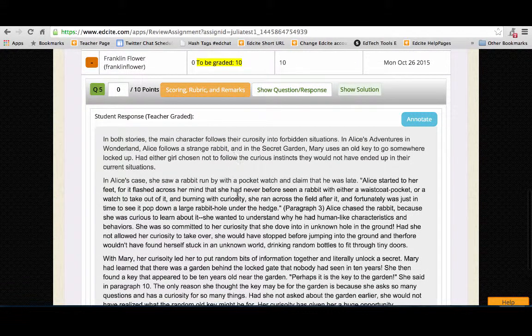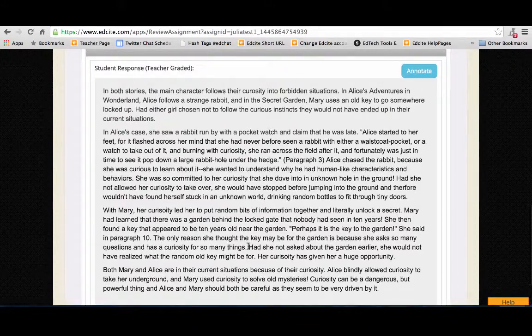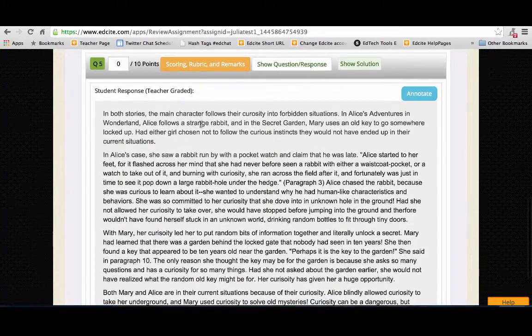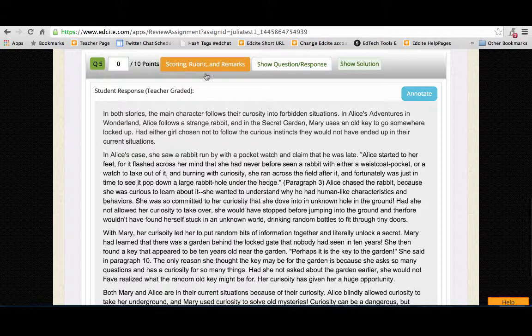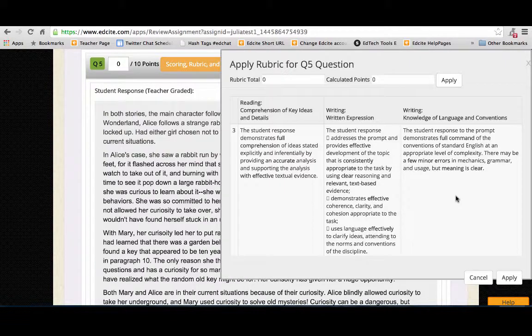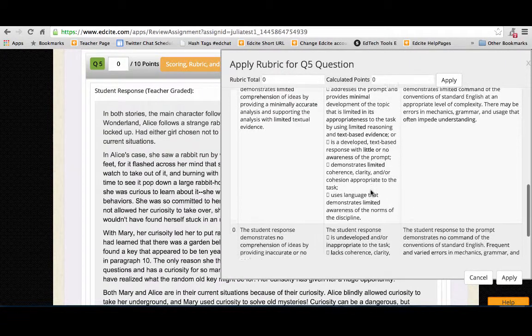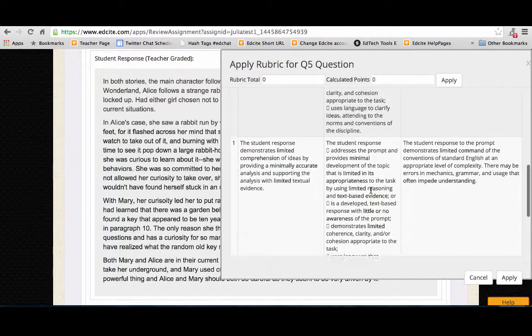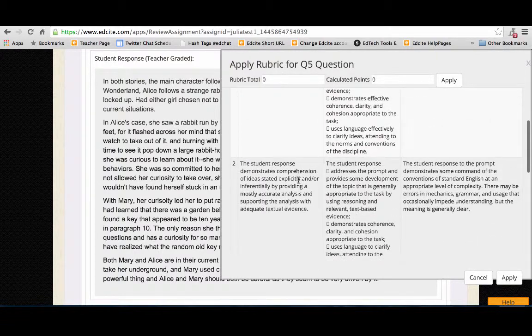So let's go ahead and just do Franklin's right here. I can go ahead and read his, you know, what seems to be a nice thorough response. Let's say I've gone through this. He's done a fantastic job. I can actually pull up the rubric associated with this question type and give him scores based on that rubric. So let's say he got a two here, a three here, and a three here.